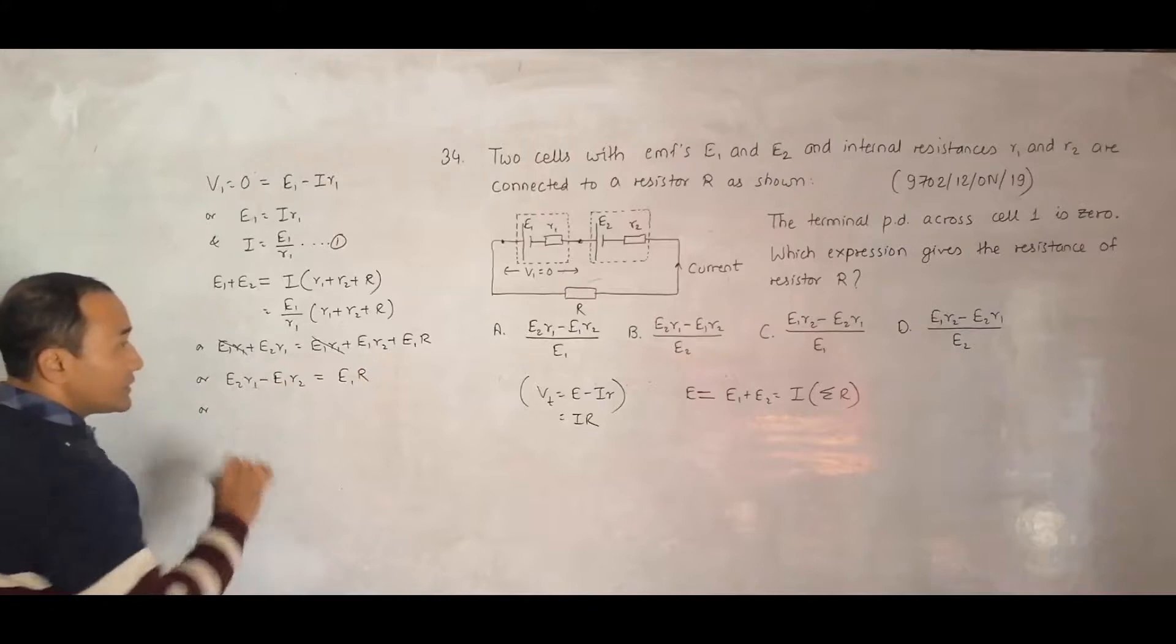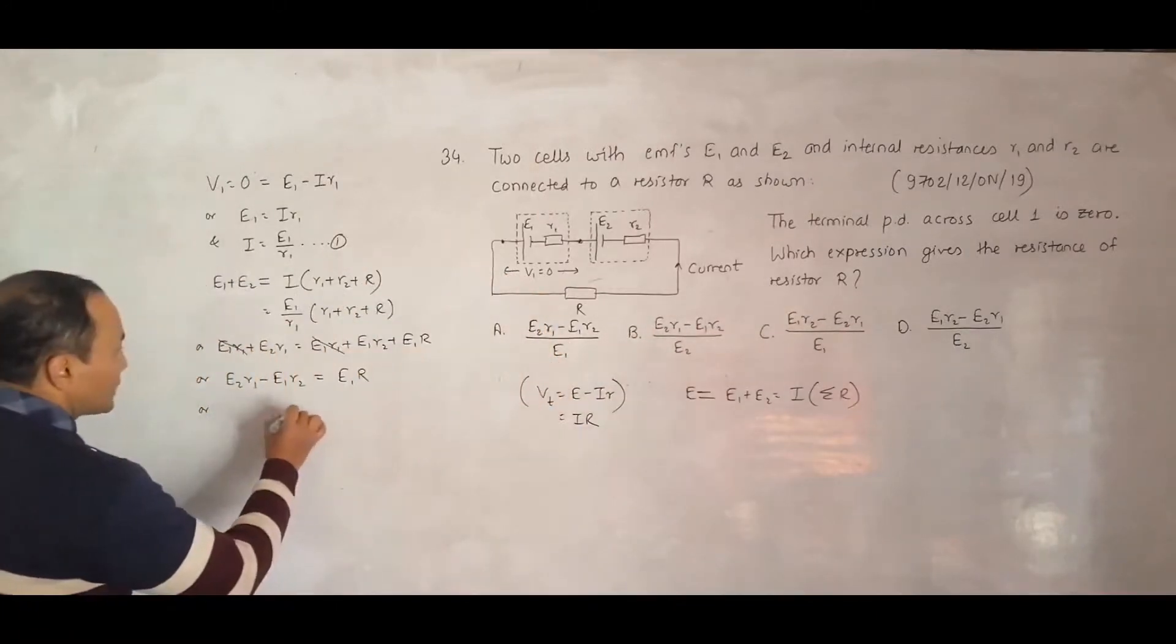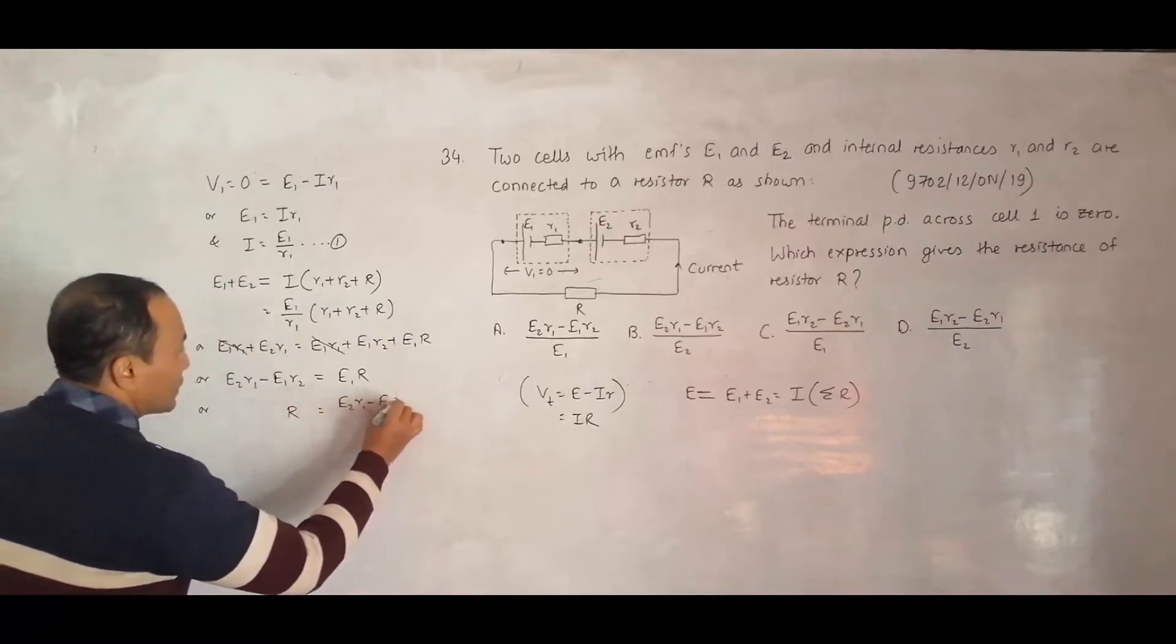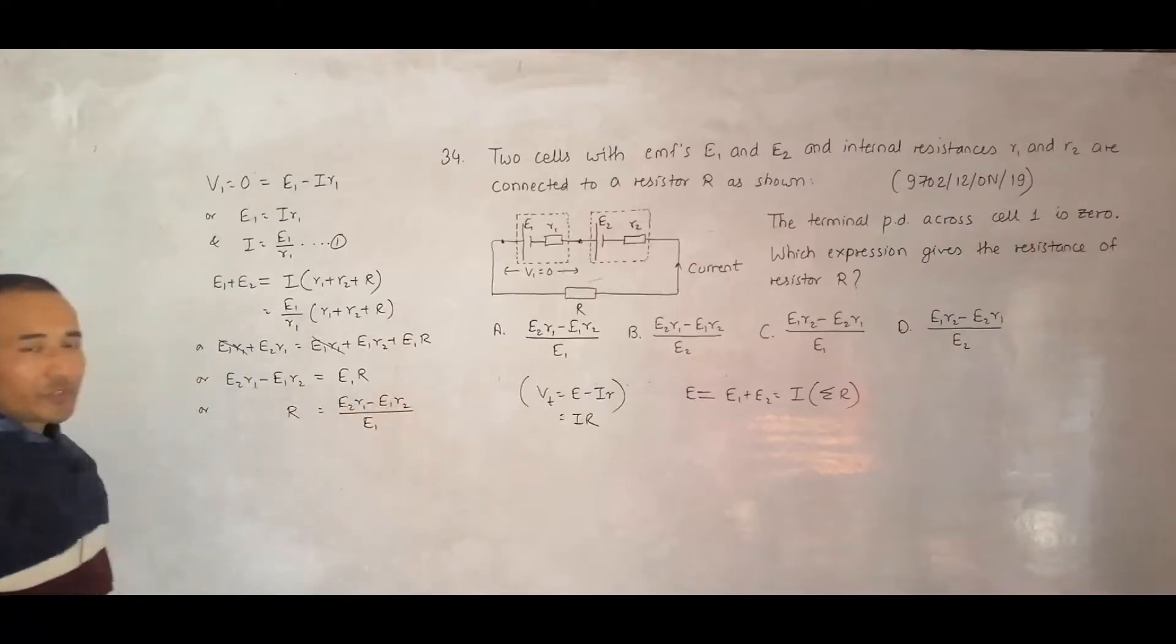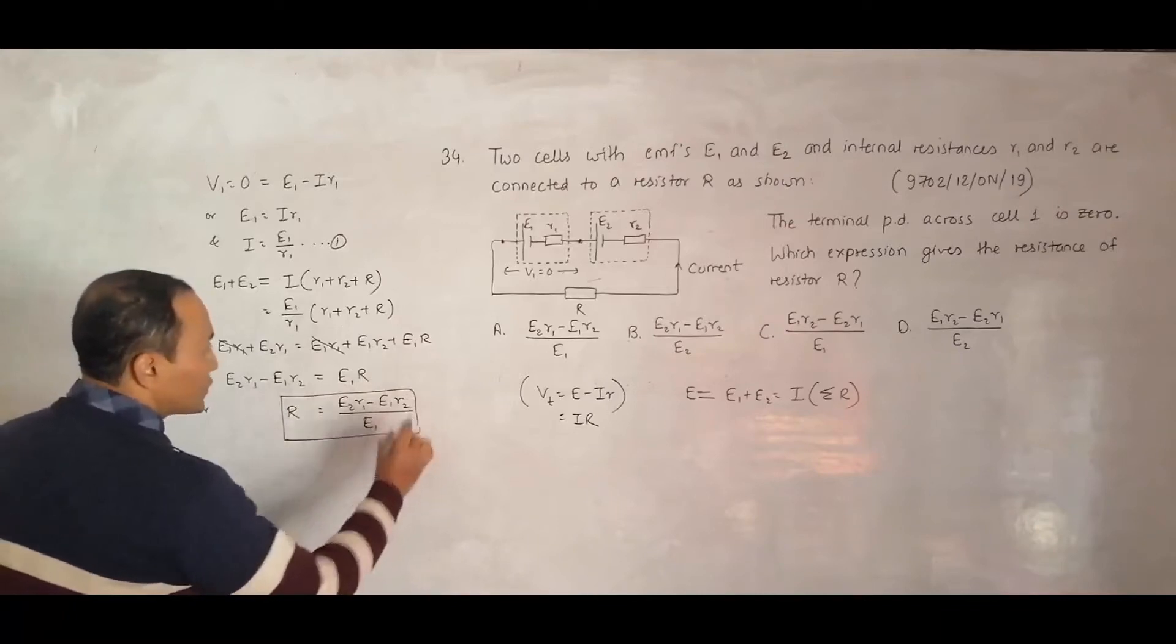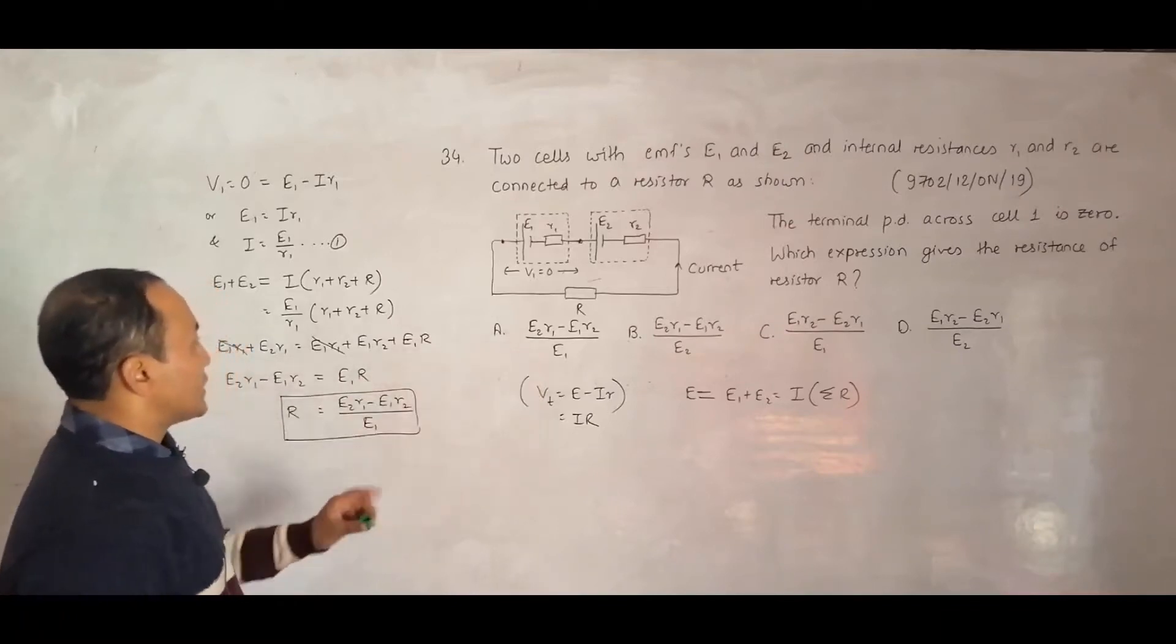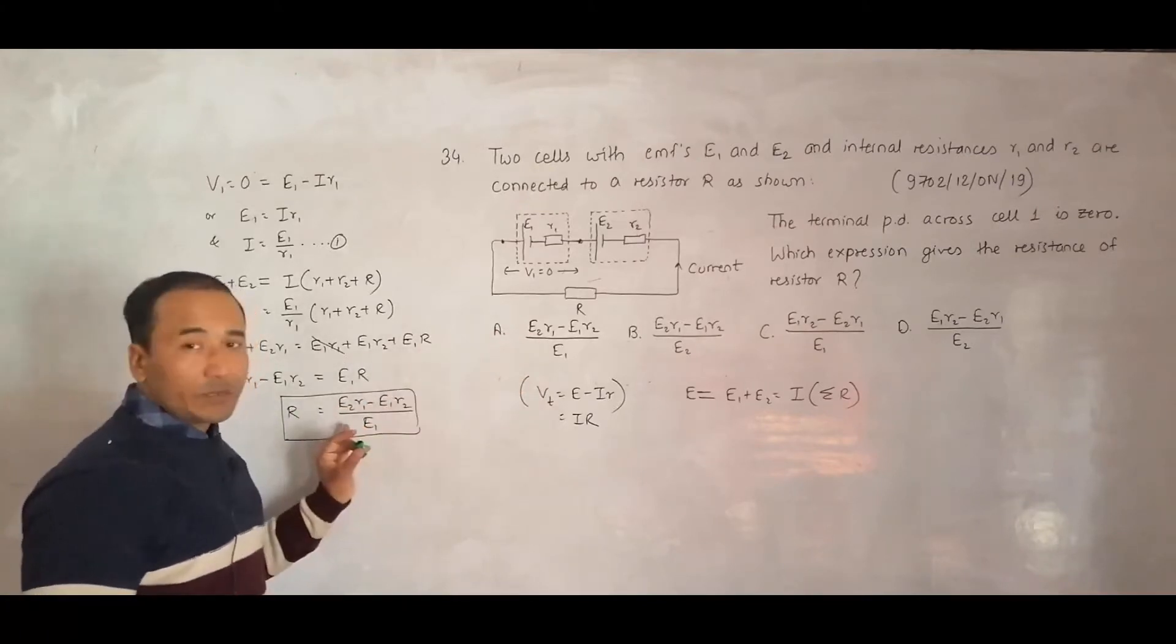I need this expression for this R. That is why I do like this, R is equal to E2 R1 minus E1 R2 whole divided by E1. With that, I can search for the choices, which one is correct. If I go through the choices, yeah, choice one is correct. It is because E2 R1 minus E1 R2 by whole E1.